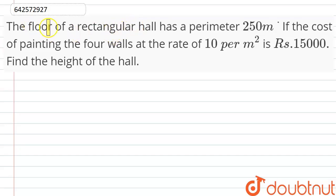Hello friends, the question states that the floor of a rectangular hall has a perimeter 250 meters and if the cost of painting the four walls at the rate of 10 per meter square is Rs. 15,000,